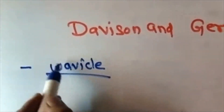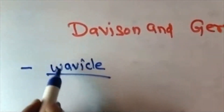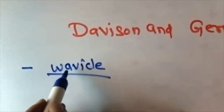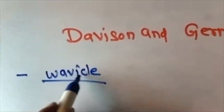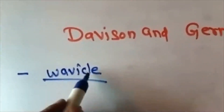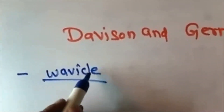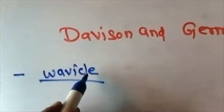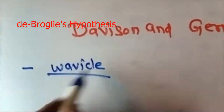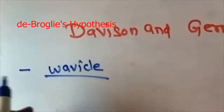Wave denotes the wave nature, and the ICLE part of wavicle denotes the particle nature. So wavicle represents dual nature — both wave and particle.